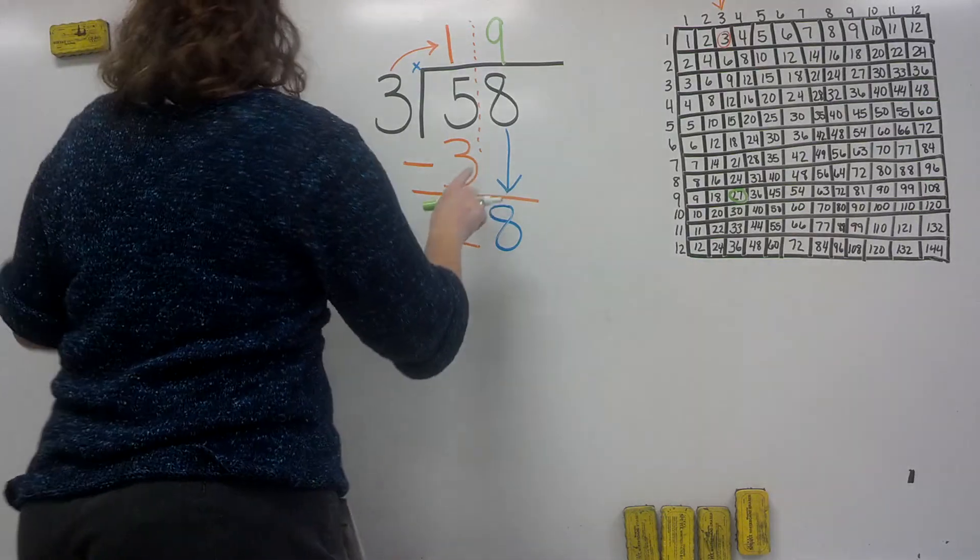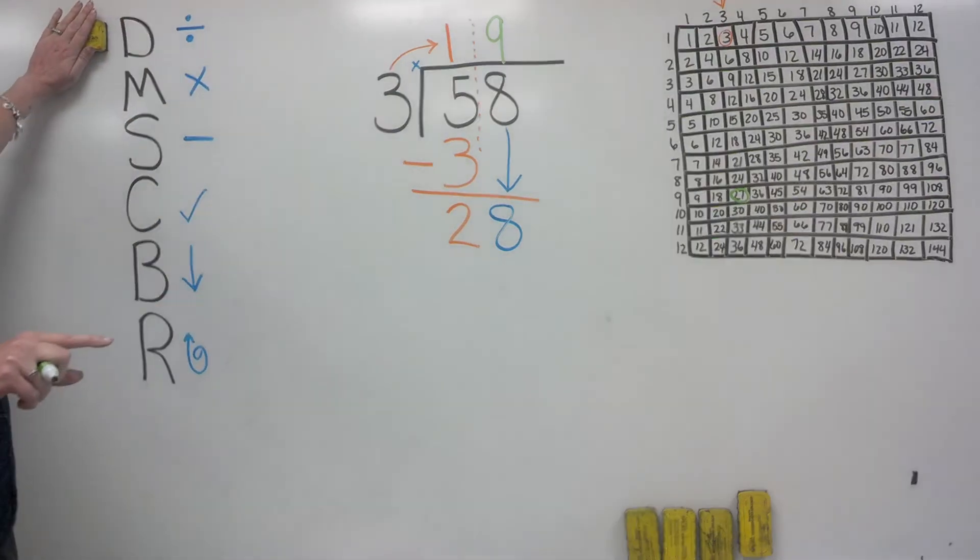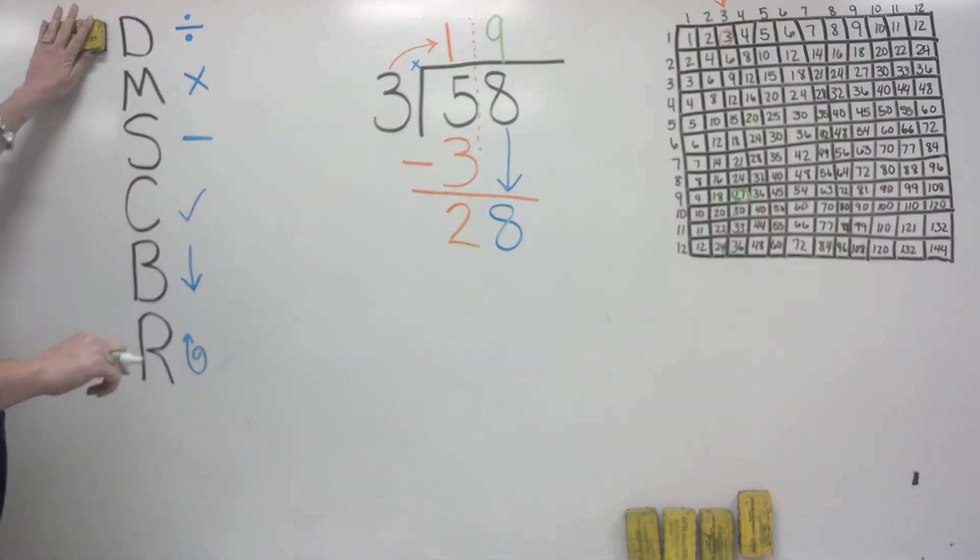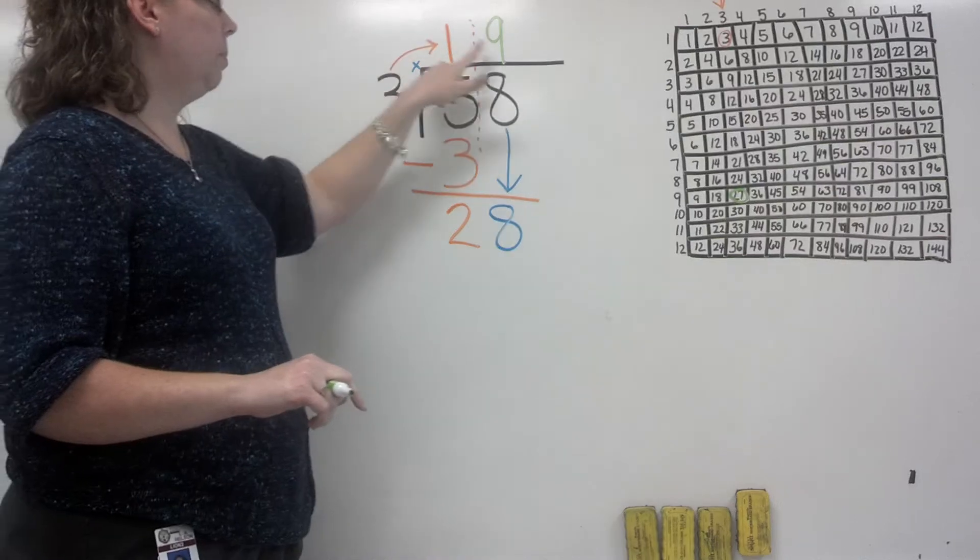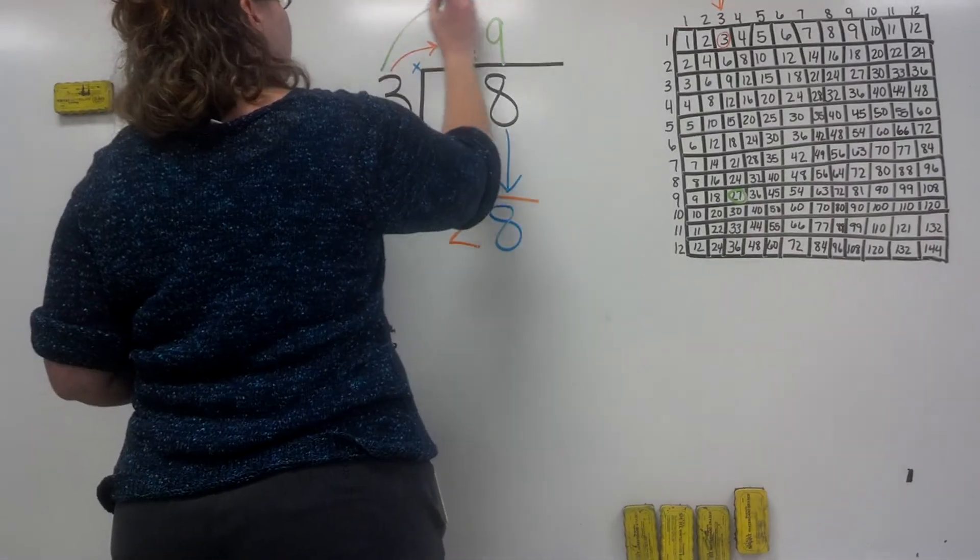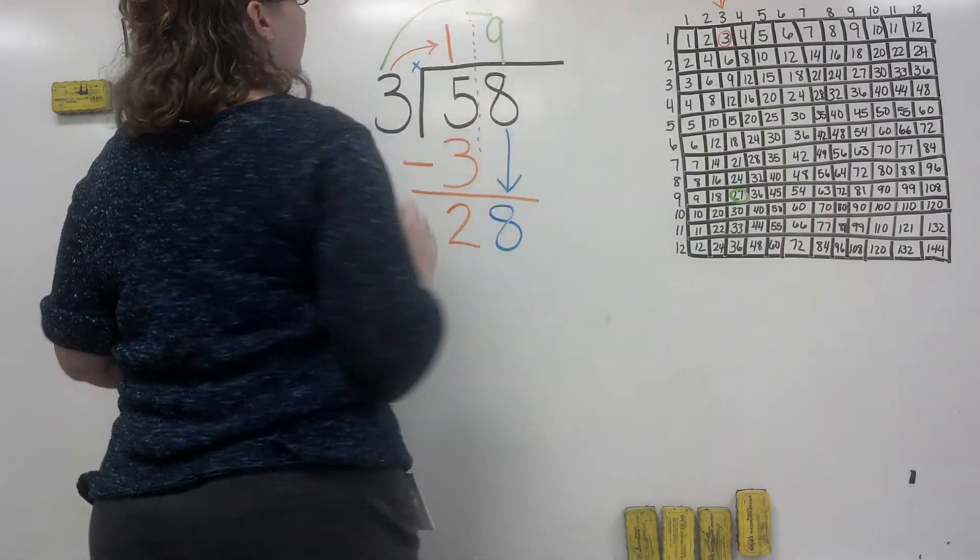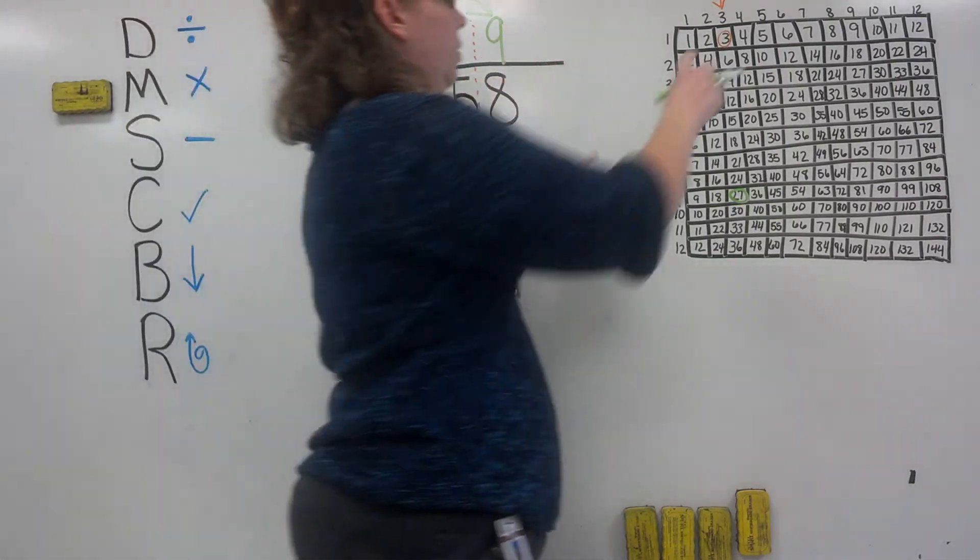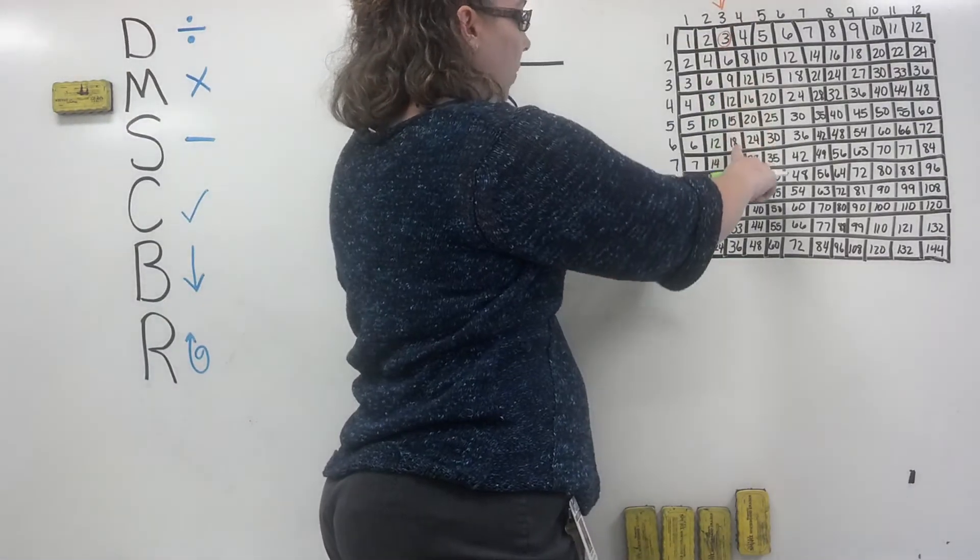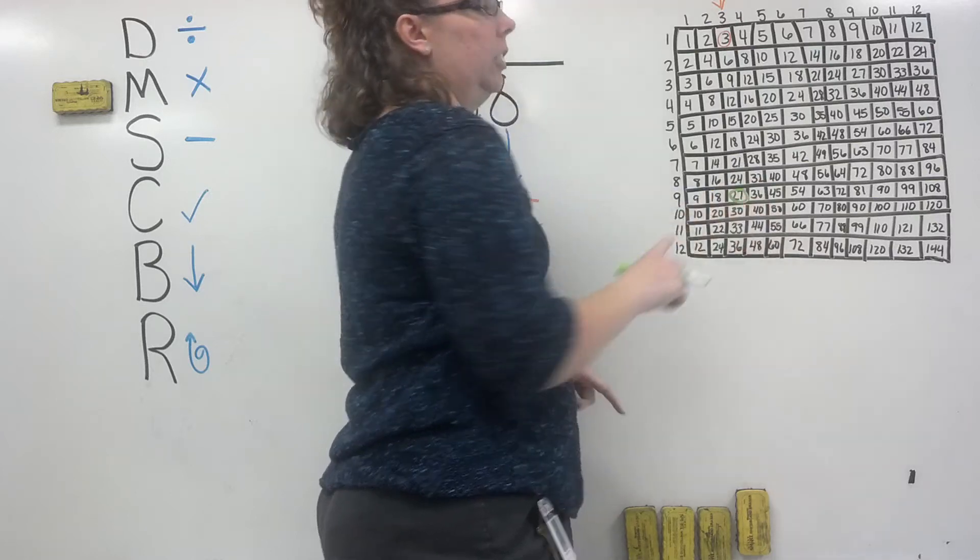We've done the first part, the division part on top. Now we need to go to the next step: multiply. We're going to multiply 3 times 9. Again, you can use your chart if you forgot. Go to 3 all the way down to 9, and your answer is 27. We're going to put 27 right here.